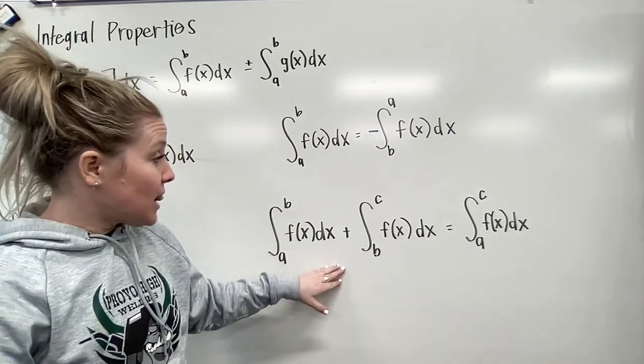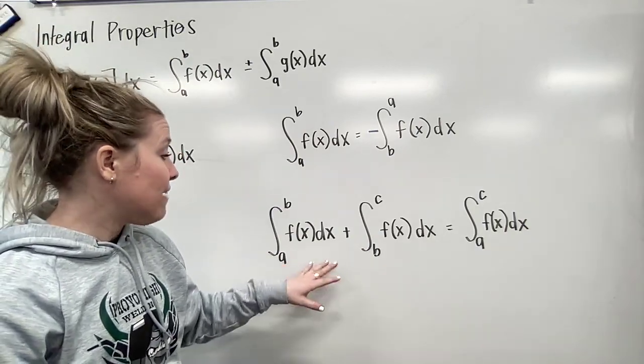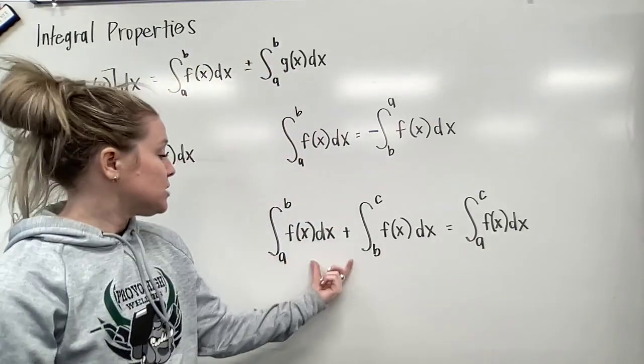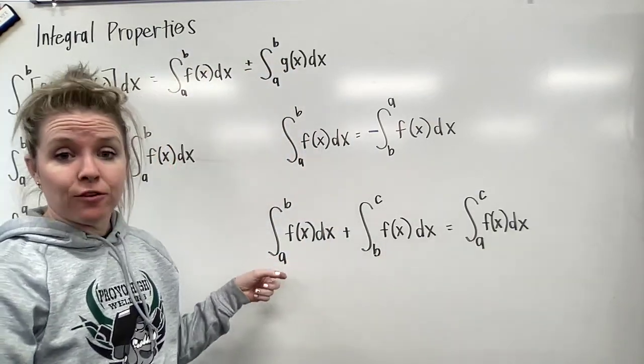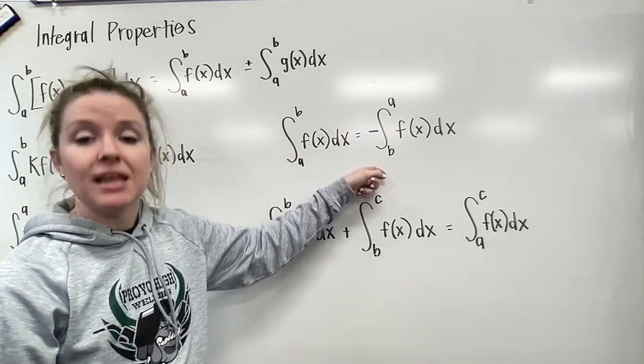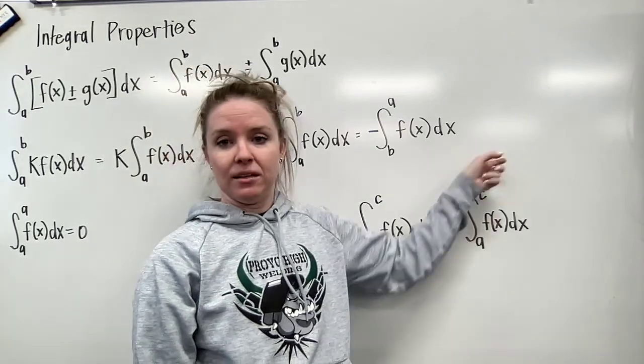Last but not least, we have the sum of two integrals equaling the full integral. This would be like finding the area from A to B and then the area from B to C. That's the same as the area from A to C.